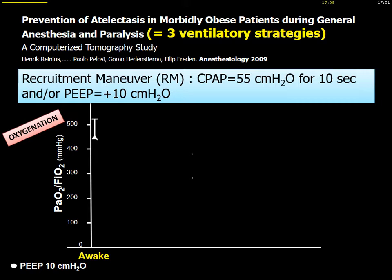This is my favorite physiological study, coming from expert leaders including Goran Hedenstierna. In my point of view, this is the most important paper helping to explain mechanical ventilation and its impact. In this physiological study, the authors evaluated three groups of U-based patients — an experimental model with low compliance — and they evaluated three strategies.